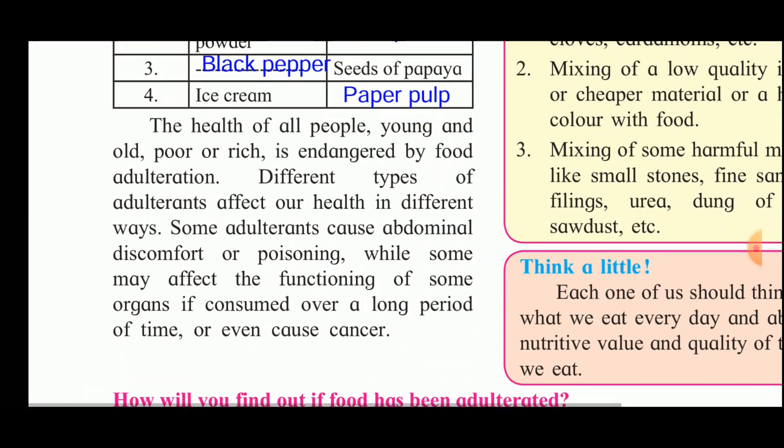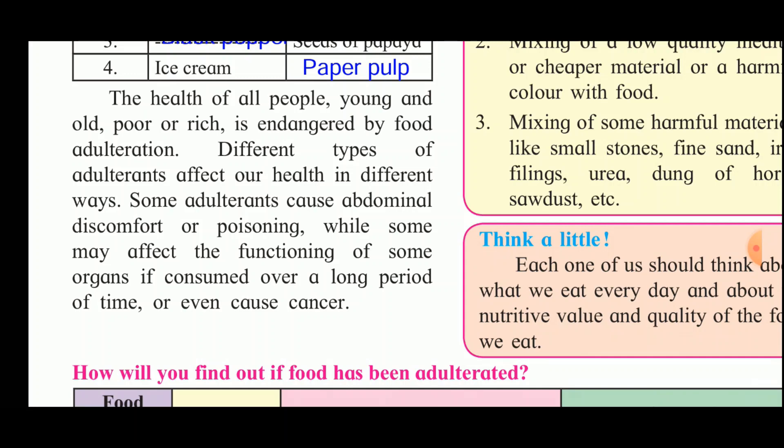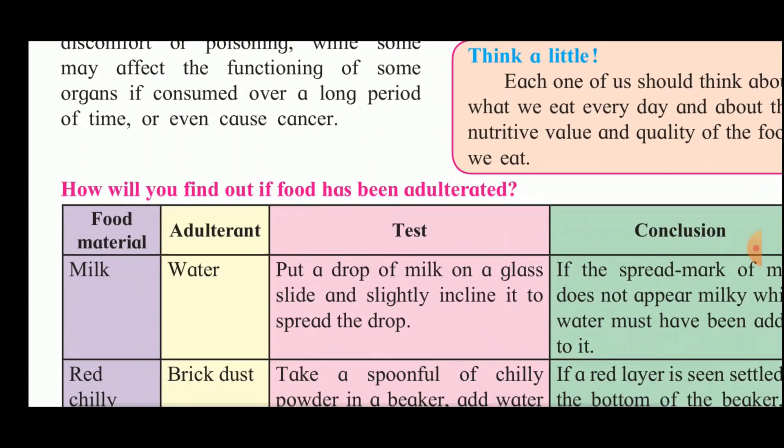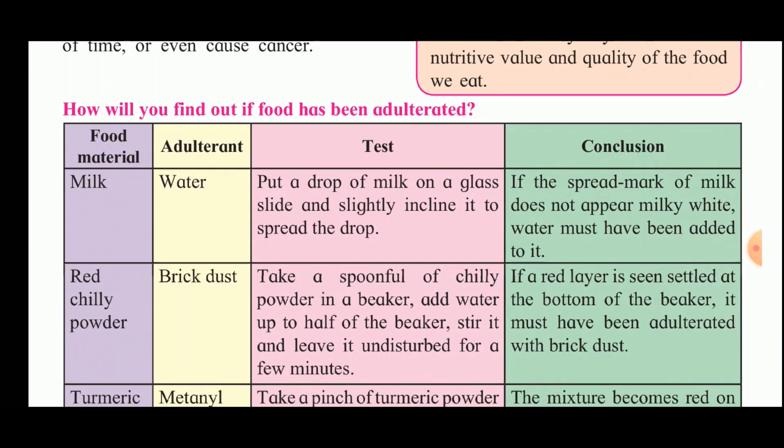The health of all people — young and old, poor or rich — is endangered by food adulteration. Different types of adulterants affect our health in different ways. Some adulterants cause abdominal discomfort or poisoning, while some may affect the functioning of organs if consumed over a long period, or can even cause cancer. For example, some foodstuffs contain lead, and consuming them over a longer time increases the risk of cancer.